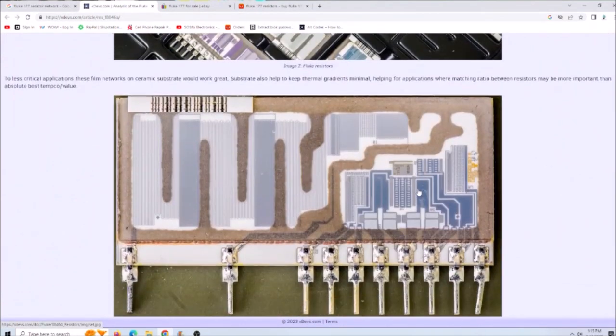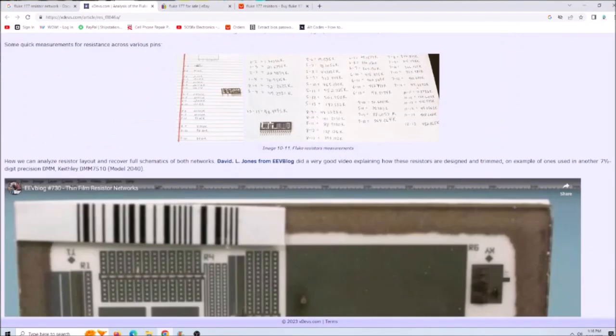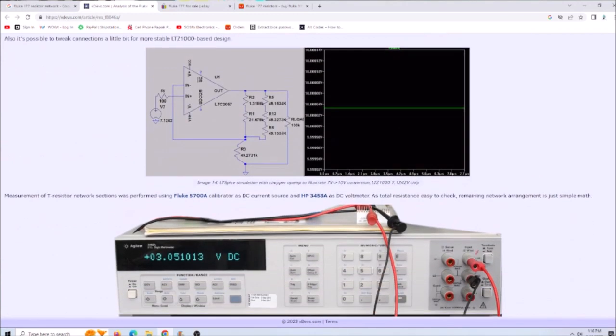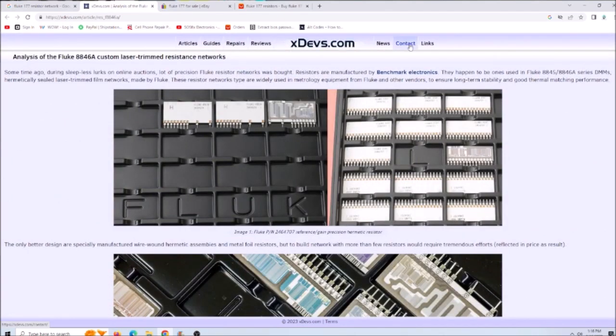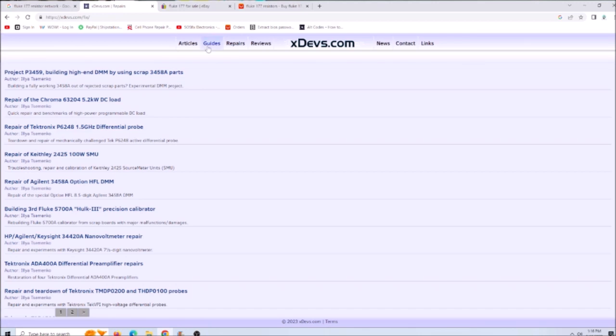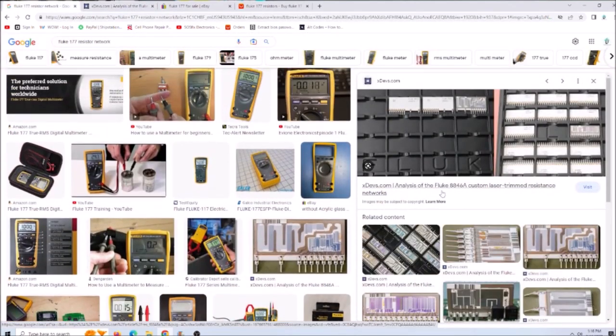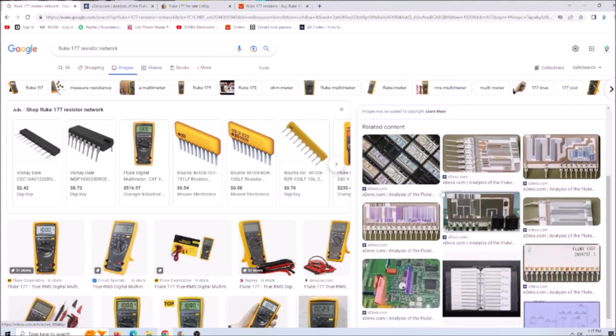This part is for the Fluke, but it's a different multimeter. On this site I can't find any search option for the multimeter that I have or for the resistor part number.